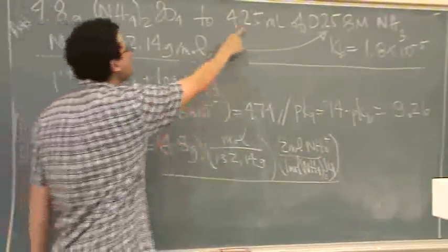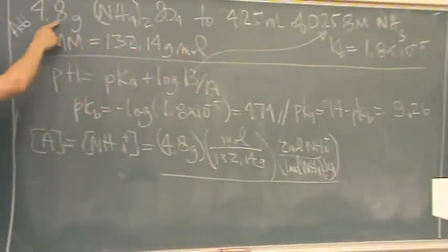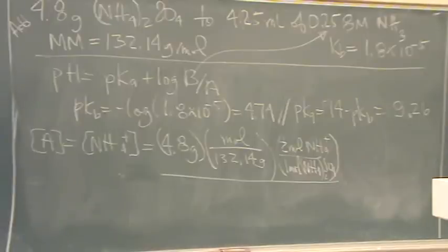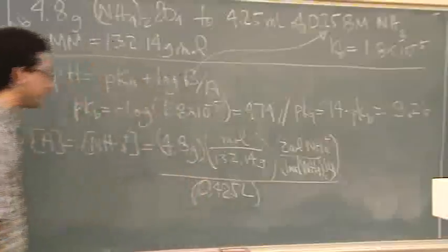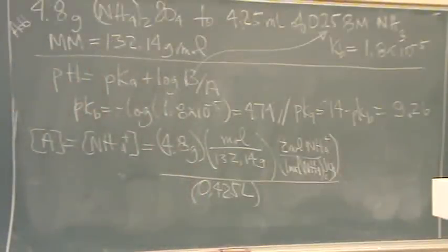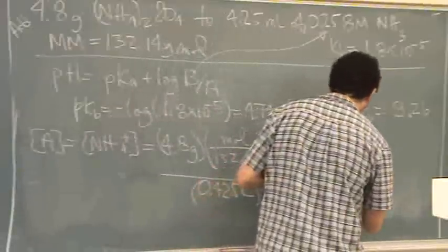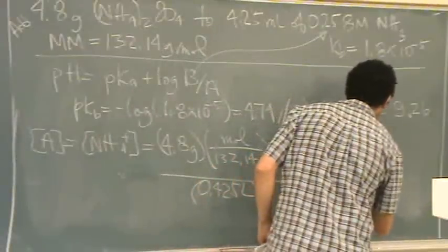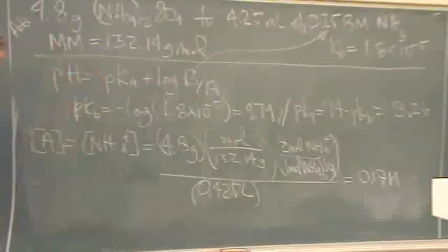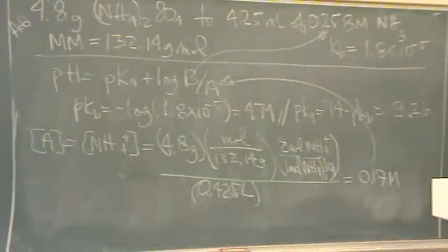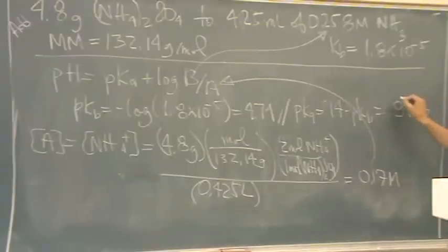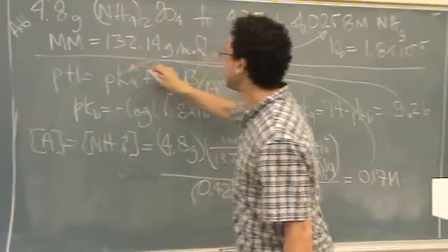Yeah, divide by the total volume. Well, it has the volume of this. We're assuming that adding the original stuff doesn't change the volume at all. So we want to divide by 425 milliliters or 0.425 liters, which gives you 0.17 molar for the acid. And this number goes right there into the A. And you already got pKa. This goes right there.